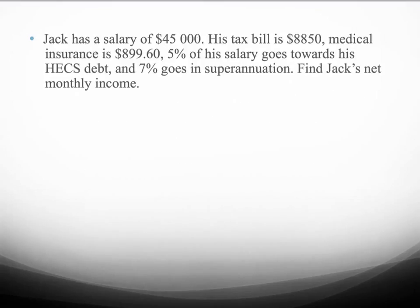In the second example, Jack has a salary of $45,000 per year. His tax bill is $8,850 for the year. He pays medical insurance of $899.60. Five percent of his salary has been taken out towards his HECS debt, and 7% is taken out in voluntary superannuation. We have to find Jack's net monthly income, so it's a good idea to underline what we actually have to find.